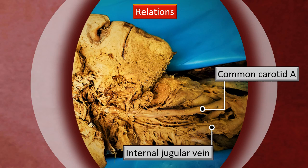More lateral to the carotid, we have pushed the internal jugular vein laterally in this dissection, but in the intact in-situ condition, the internal jugular is closely plastered to the carotid and covered with the carotid sheath. A third item within the carotid sheath is the vagus nerve. So the external carotid, the internal jugular, and the vagus are the three contents within the carotid sheath.